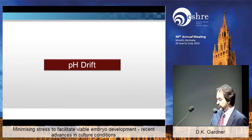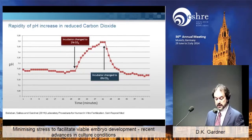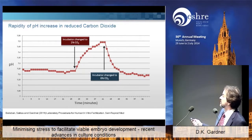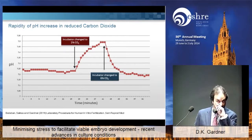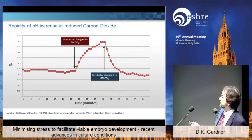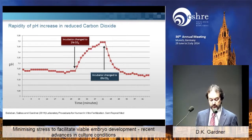pH drift is a real problem, certainly for the pre-compacted embryo, where the embryo is so much more sensitive to its environment. This slide shows what happens when you take a bicarbonate-buffered medium and change the CO2 in your incubator — you get a rapid rise in pH, and that happens every time you take a dish out of your incubator. In a matter of just a few minutes you see those increases in pH, and pH is a very profound effector of cell physiology.